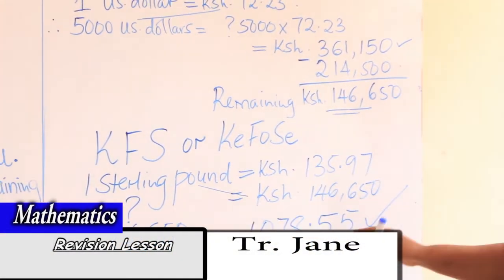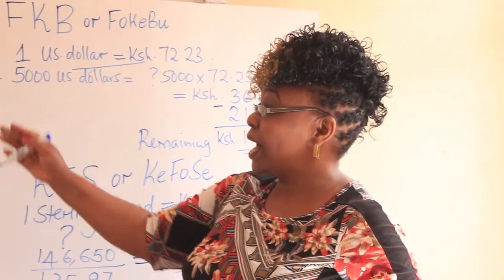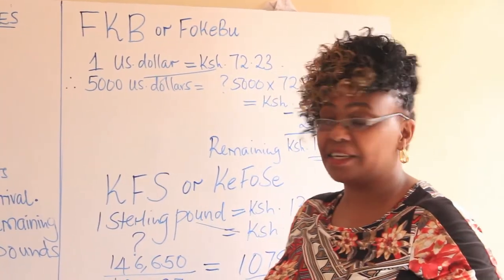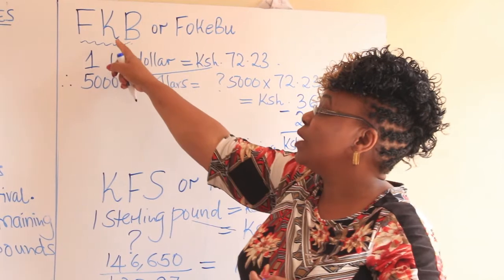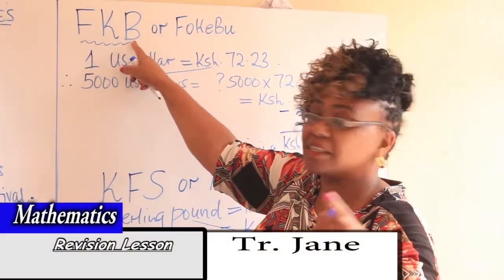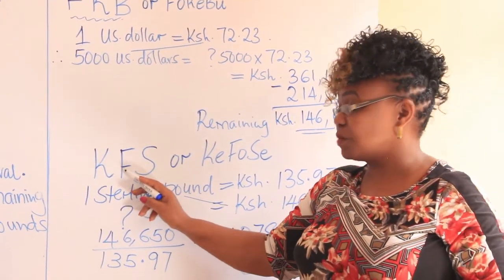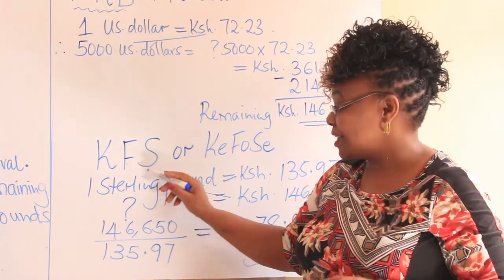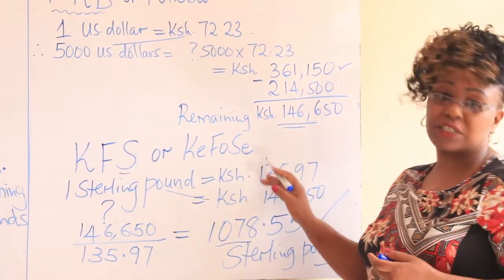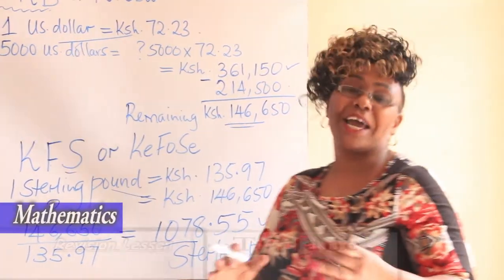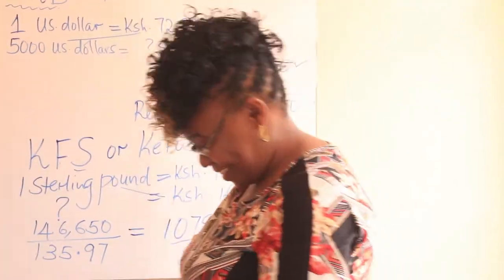So that is the answer. The most important thing when dealing with currency exchange rate problems is to know the formulas: FKB — Foreign to Kenya shillings, the Bank buys; and KFS or KFC — Kenya shillings to Foreign currency, the Bank sells. With that, learner, go and do more practice. I wish you all the best. Bye-bye.